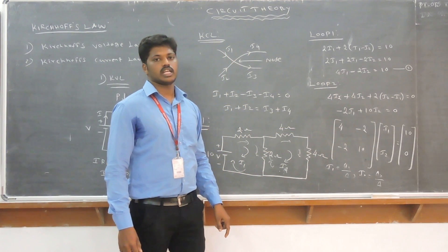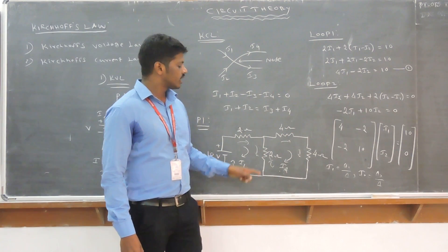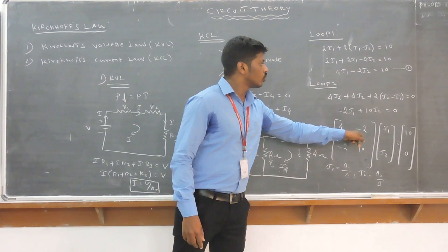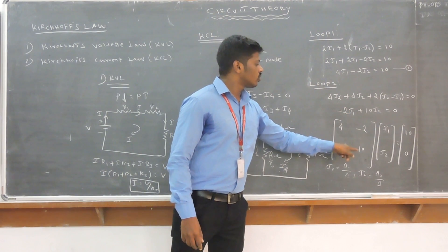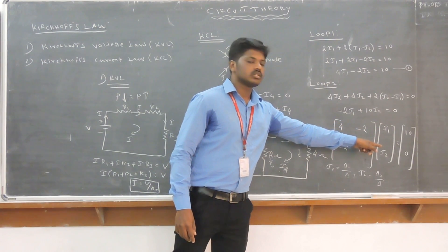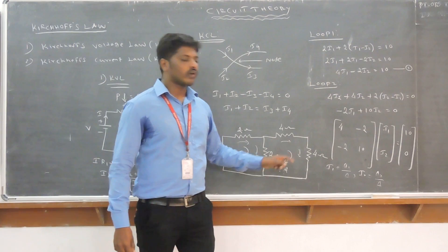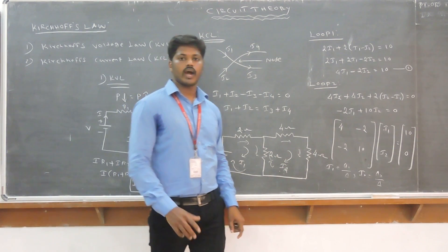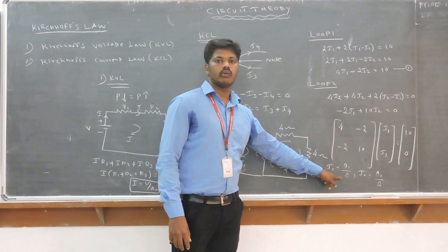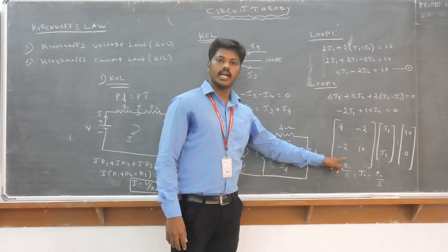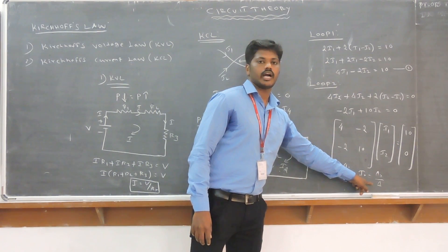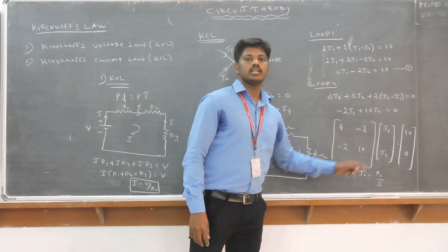Next step: form a matrix. This is a 2×2 matrix because there are only 2 loops. The coefficient matrix is [4, −2; −2, 10], multiplied by [I1; I2], equals the voltage matrix [10; 0]. To find I1 and I2, we use Cramer's rule: I1 equals Δ1 divided by Δ, and I2 equals Δ2 divided by Δ, where Δ is the determinant of the coefficient matrix. From this, we can calculate the currents I1 and I2.